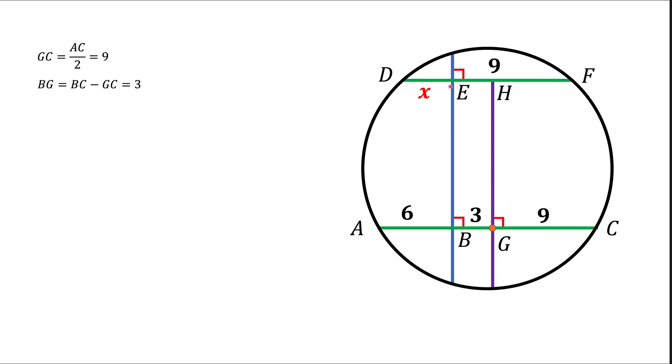This line is going to be parallel to this blue line EB and it's going to be at 90 degrees to DF. And as we discussed before, the center of the circle, point O, is going to lie on this purple line GH.